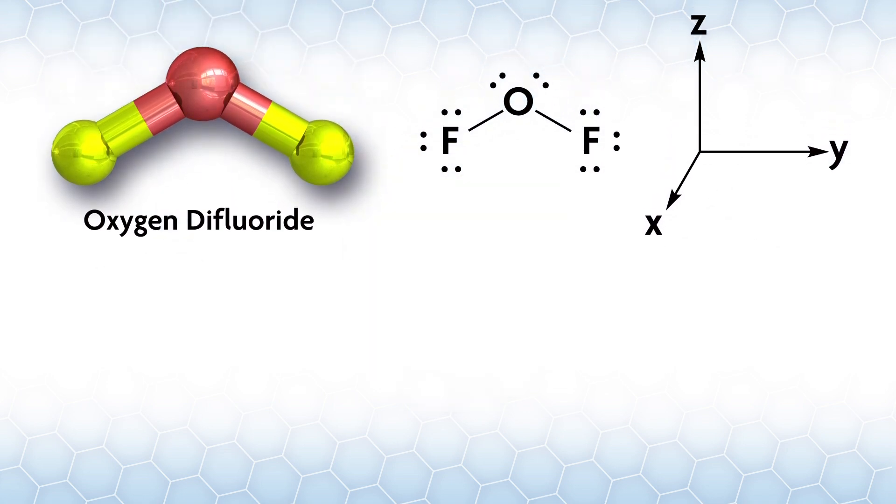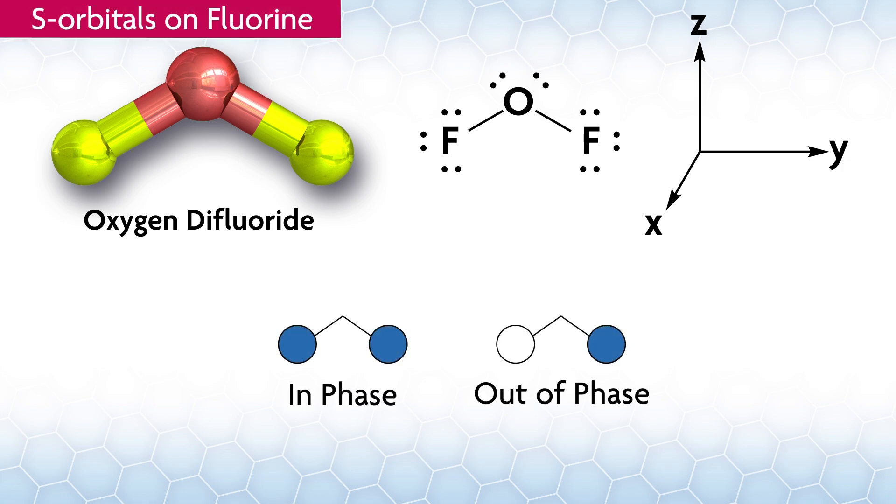Let's look at the MO diagram for a stable but reactive compound, oxygen difluoride, OF2. The SALCs for the orbitals on the fluorines are relatively easy to calculate, but can also be done by inspection. There are only two fluorines, so each type of orbital—s, pz, px, py—will have in-phase and out-of-phase combinations, so you can assign those to irreducible representations by looking at their symmetries. Starting with the s orbitals on the fluorines, we can make in-phase and out-of-phase combinations like this. Then we can apply the symmetry operations in C2v to see what their symmetry is.